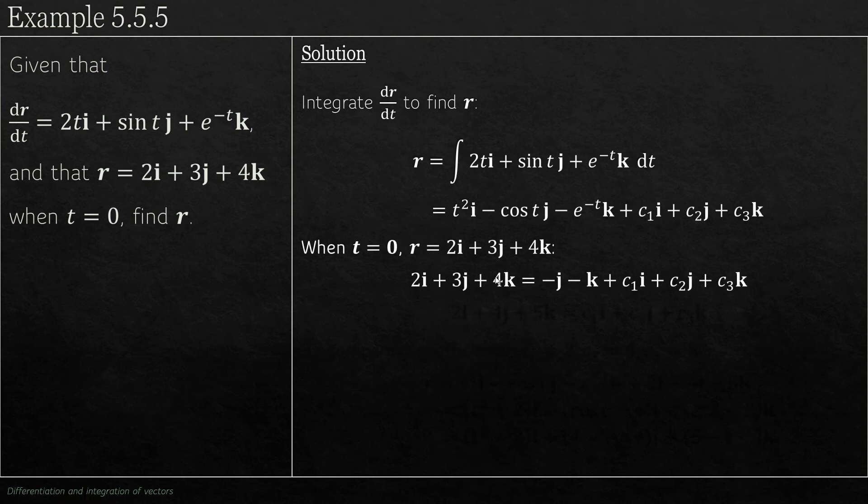Be very careful here because cos t when t is 0 is 1, and e^(-t) when t is 0 is also 1. So we're going to get a -1j and a -1k. We get 0i because 0² is 0. So don't just think when t is 0 everything disappears, it doesn't.